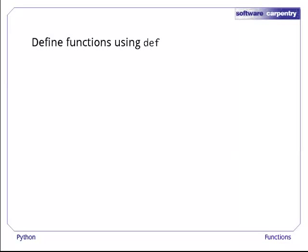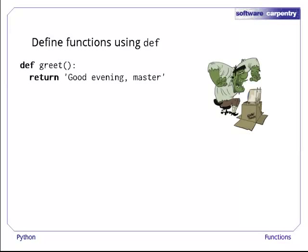In Python, we define new functions using the keyword DEF. For example, here's a function that does nothing but return a particular string to its caller. To call it, we just use the function's name, followed in this case by empty parentheses. If we print the result, it's the string the function returned.